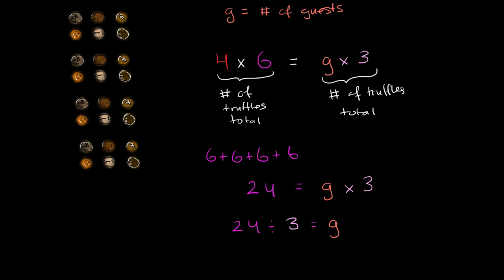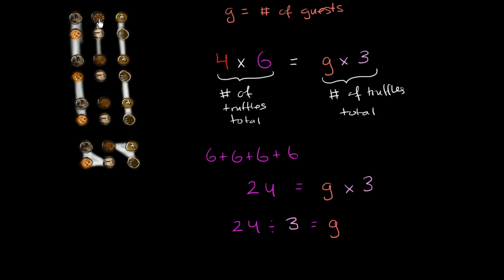So let's divide them into groups of 3. Here is one group of 3, two groups of 3, three groups of 3, four groups of 3, five groups of 3, six groups of 3, seven groups of 3, and eight groups of 3. So if I take 24 things and divide into groups of 3, I get eight groups — so 24 divided by 3 is 8, which must equal the number of guests.